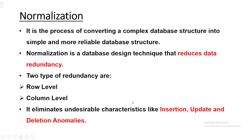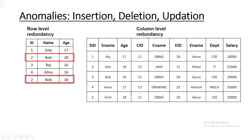Let's see what these issues are, but before that we will understand row-level and column-level redundancy. Suppose we have a database with columns id, name, and age. If you look at this database you will find that two rows are exactly the same. It may happen in your database that multiple rows are the same at different places — that is duplication of data, which must be minimized. To reduce row-level redundancy, there is a concept of the primary key. Suppose you declare the id column as a primary key — we know a primary key is unique and cannot be null.